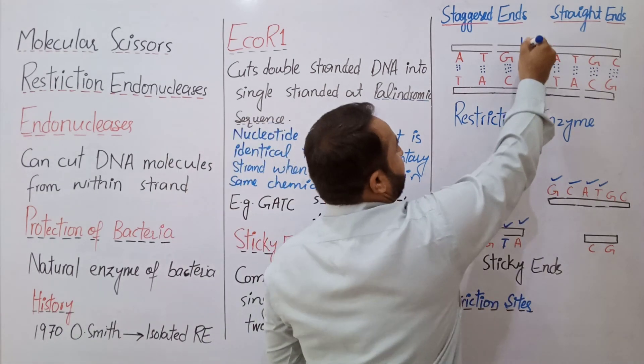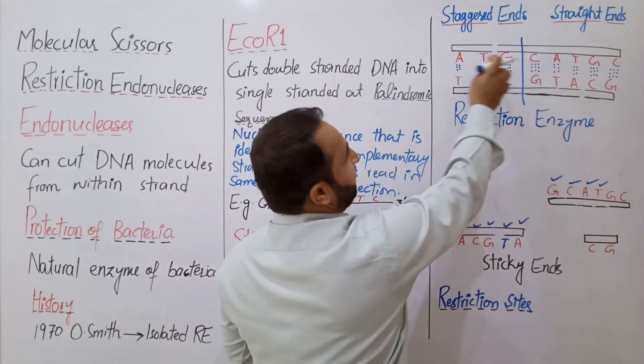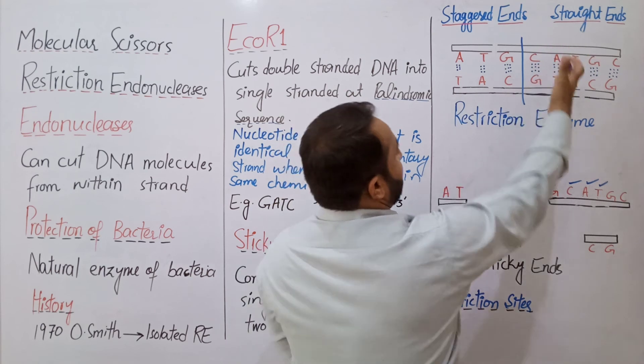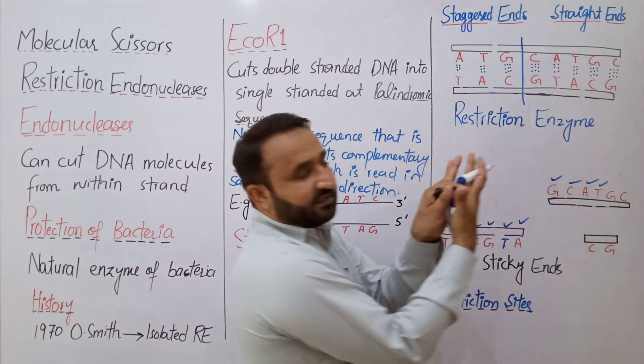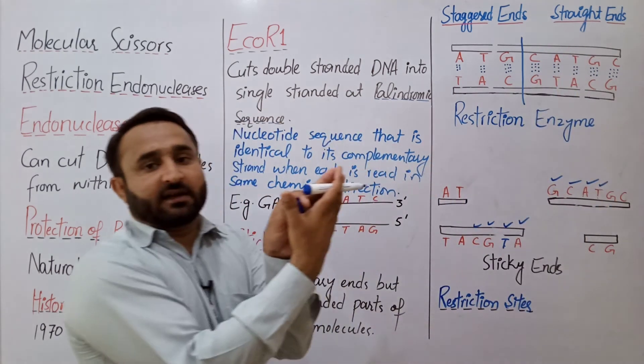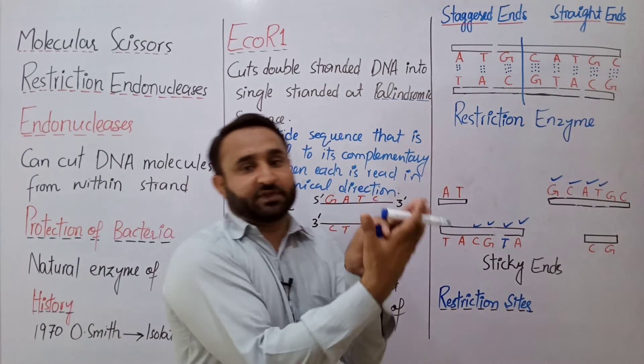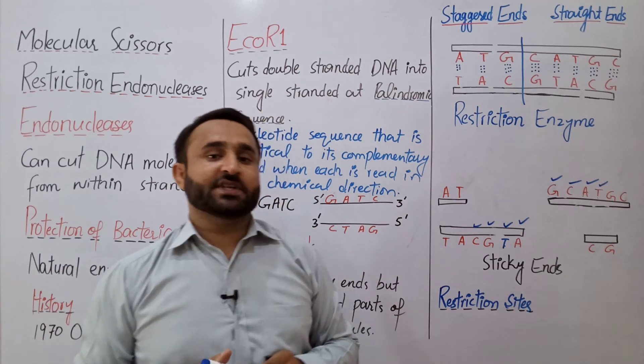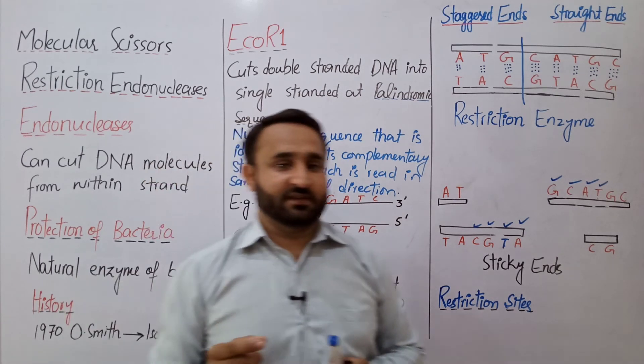In contrast, if it is a blunt end, the DNA is cut straight across both strands at the same position. These are not sticky — the ends are not complementary single-stranded overhangs, so blunt ends do not combine as easily as sticky ends.